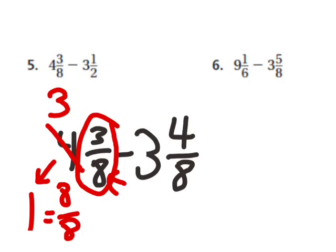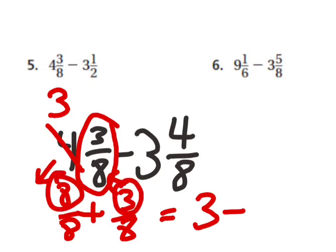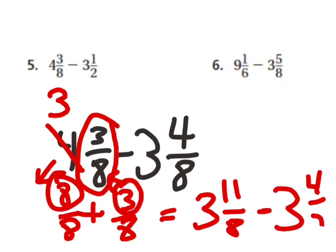One whole has the same numerator as the denominator, so I could change it to two over two, eight over eight — it doesn't matter. But I am choosing to change it to eight over eight so that I can add it very easily to three eighths. I take my eight eighths that I took out of the four, add it to the three eighths, and now my four and three eighths becomes three and eleven eighths — because eight plus three is eleven — and my denominator stays the same.